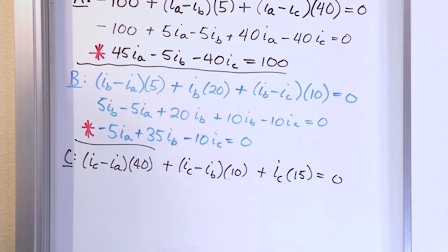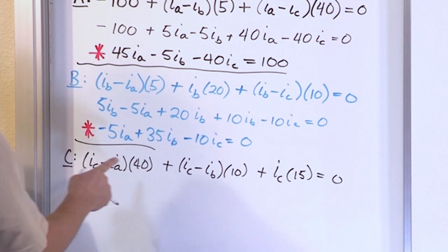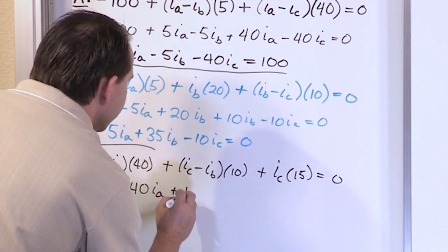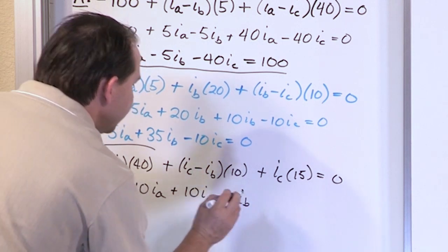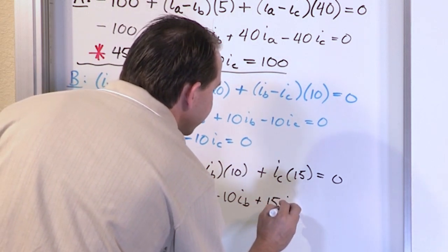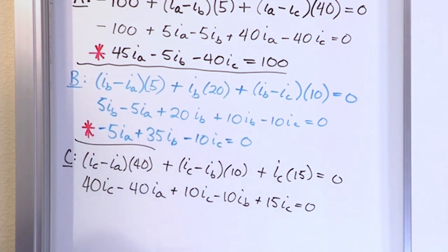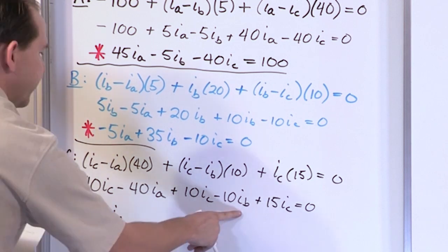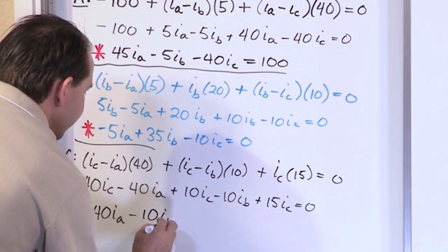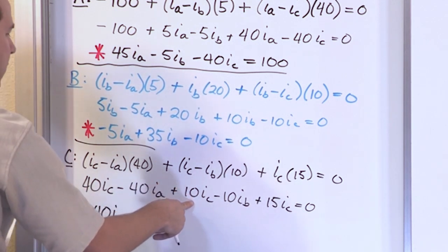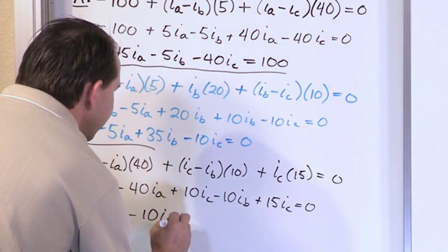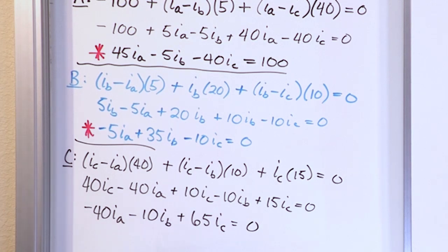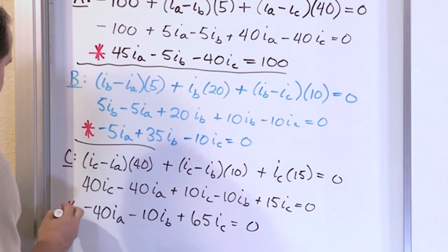Expanding the mesh C equation: 40(IC − IA) + 10(IC − IB) + 15 IC = 0. Collecting terms: the IA term is −40 IA, the IB term is −10 IB, and the IC terms are 40 + 10 + 15 = 65 IC. So the third mesh equation is: −40 IA − 10 IB + 65 IC = 0.